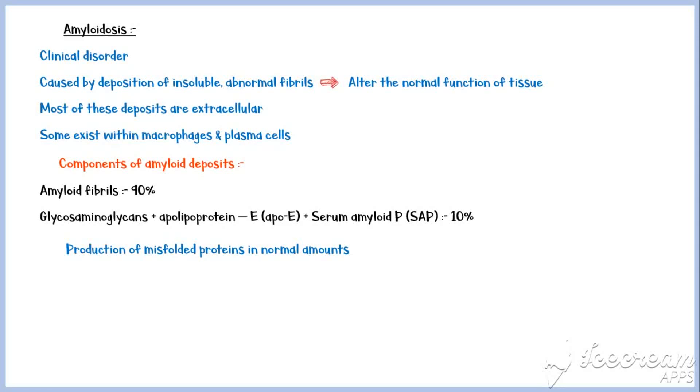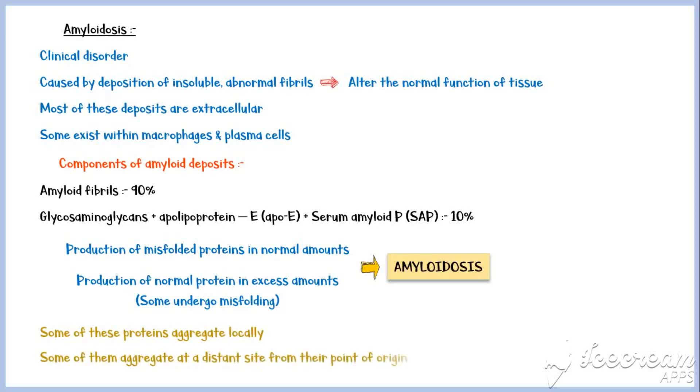Amyloidosis results either from production of misfolded proteins in normal amounts due to various reasons, or production of normal protein in excess amounts, where some of them undergo misfolding. Some of these amyloids aggregate locally, and some of them aggregate at a distant site from their point of origin.